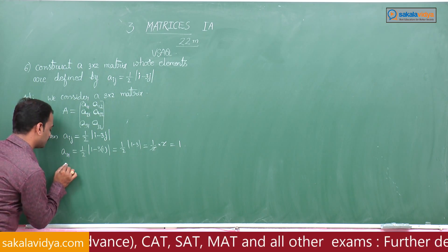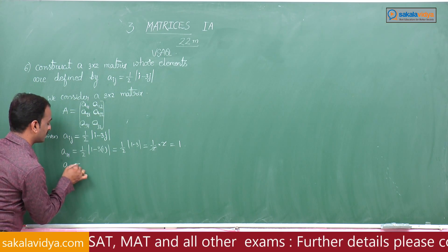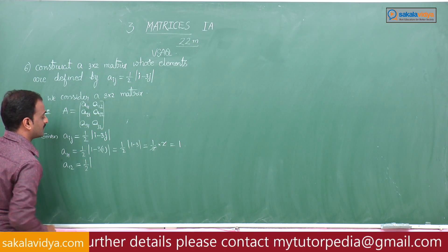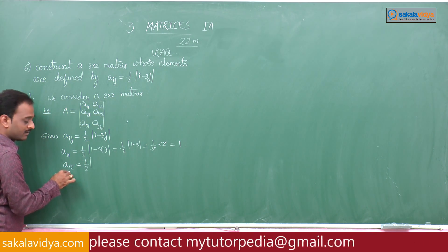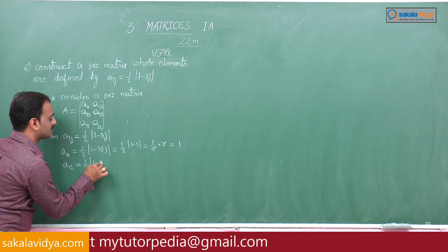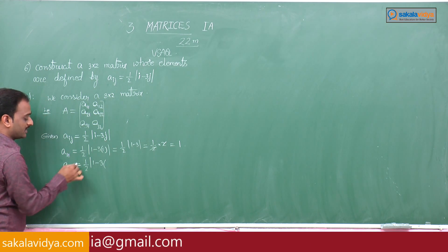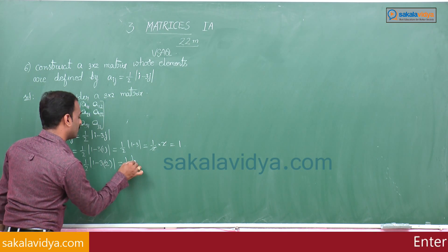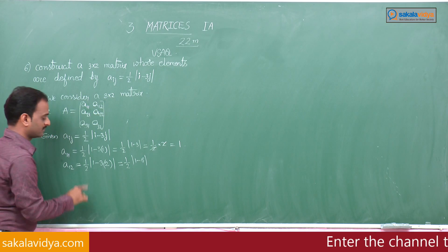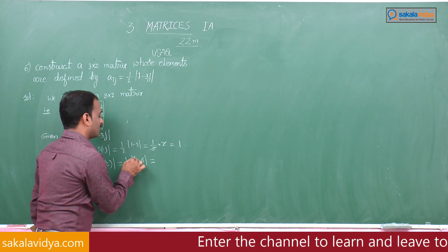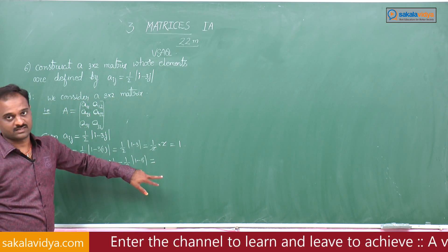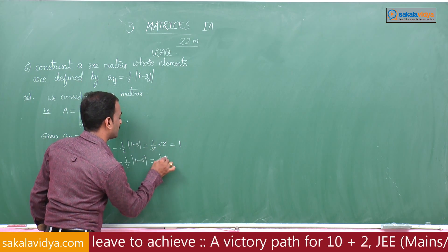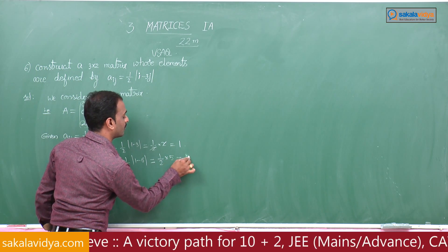Next element a12: first row, second column, so i equals 1 and j equals 2. We get 1 by 2 into mod of 1 minus 3 into 2, that is 1 by 2 into mod of 1 minus 6, which is modulus of minus 5 equals 5. So a12 equals 1 by 2 into 5, that is 5 by 2.